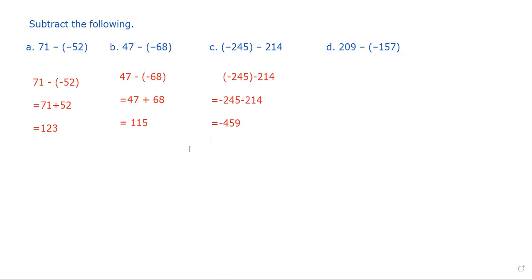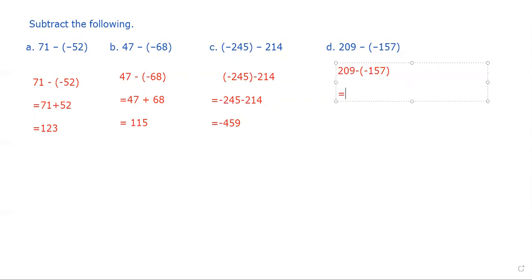So when we subtract 214 from negative 245, we get the answer negative 459. Now let's see the next example: 209 minus negative 157. We write the question: 209 minus negative 157. Again, there is a minus sign outside the bracket and a minus sign inside the bracket along with 157. We write 209 as it is — minus minus becomes plus — so the sign is positive: 209 plus 157. Adding them, the answer is 366.